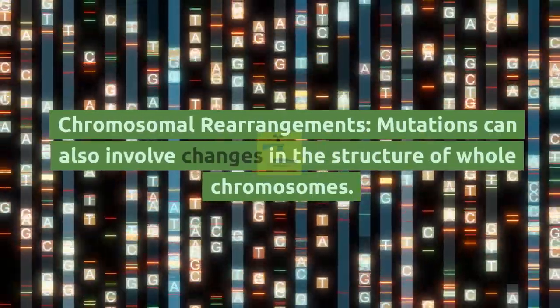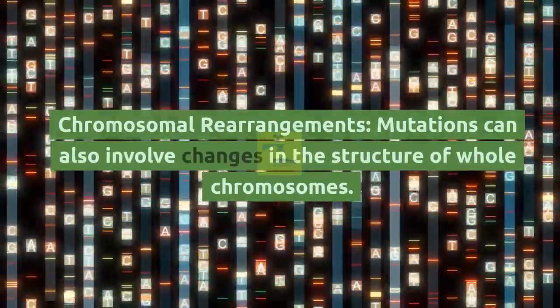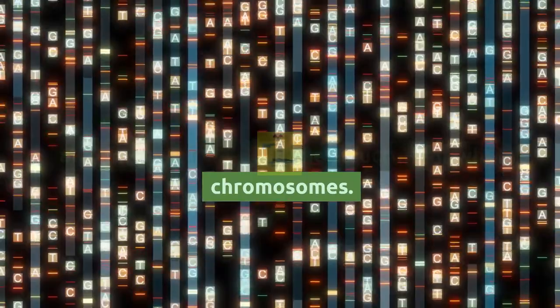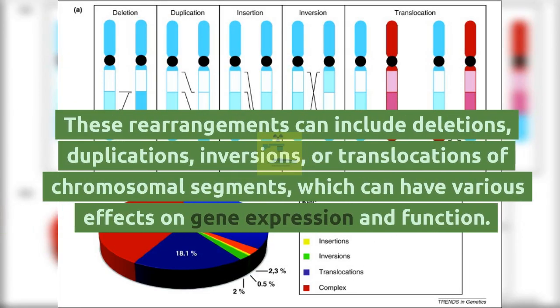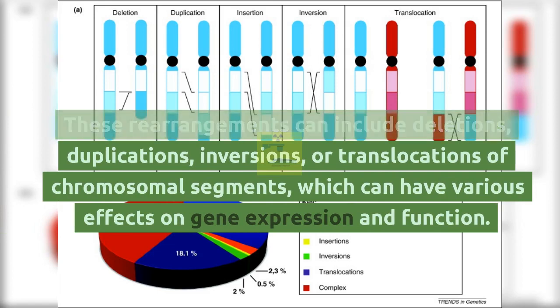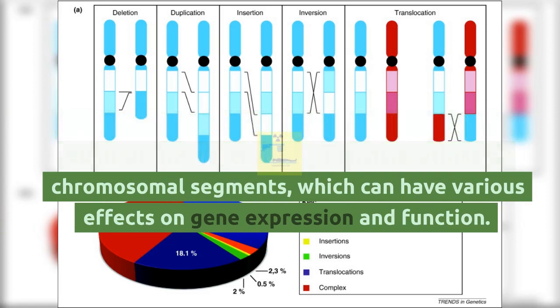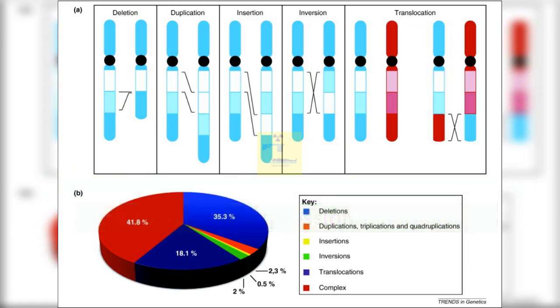Chromosomal rearrangements are mutations that involve changes in the structure of whole chromosomes. These rearrangements can include deletions, duplications, inversions, or translocations of chromosomal segments, which can have various effects on gene expression and function.